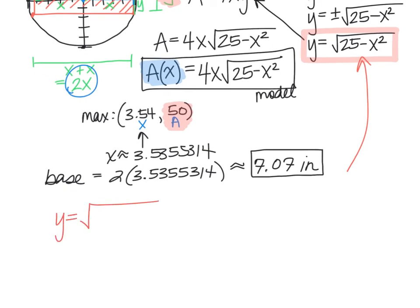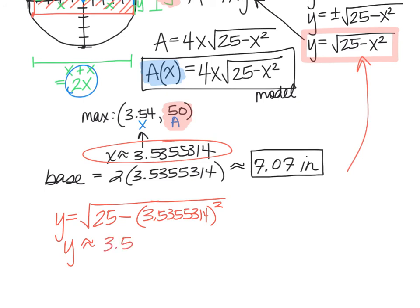Y equals the square root of 25 minus X squared. I'm going to use all of those decimals here from that X value, that 3.5355314, just for accuracy. So using your calculator, you can put that in and get an approximate for Y. This gives 3.5355. There's some additional decimals, but I'll just leave it there to these four decimals. So therefore, now we're going to multiply that value by two to actually get my height of the rectangle. So my height will be two times this value 3.5355.